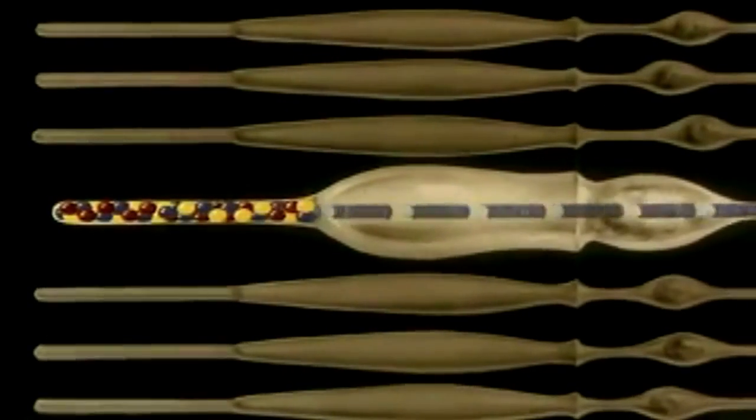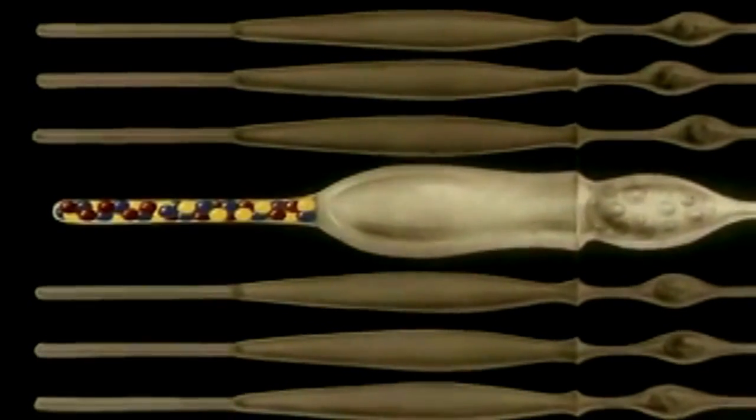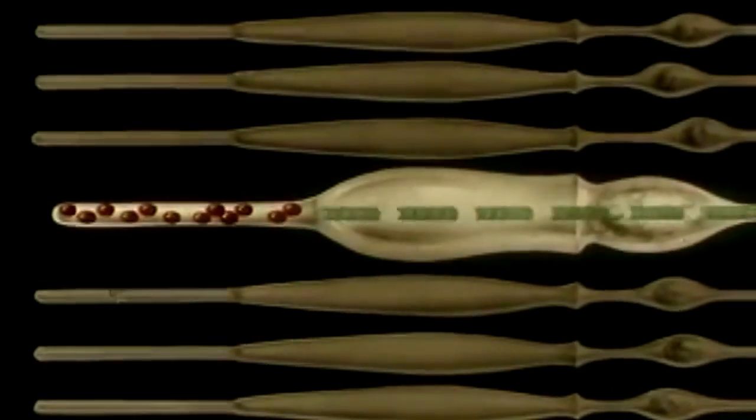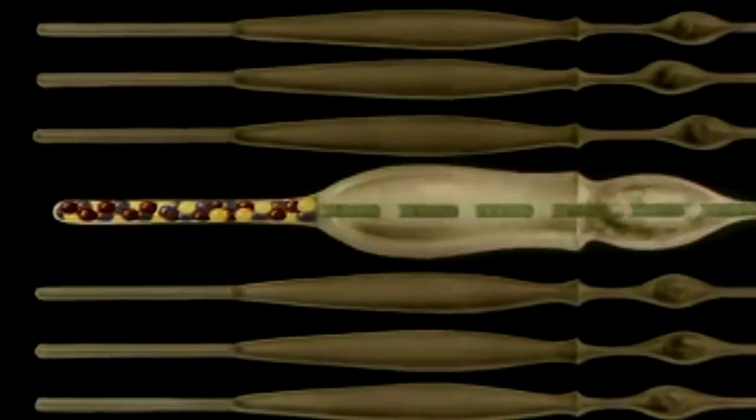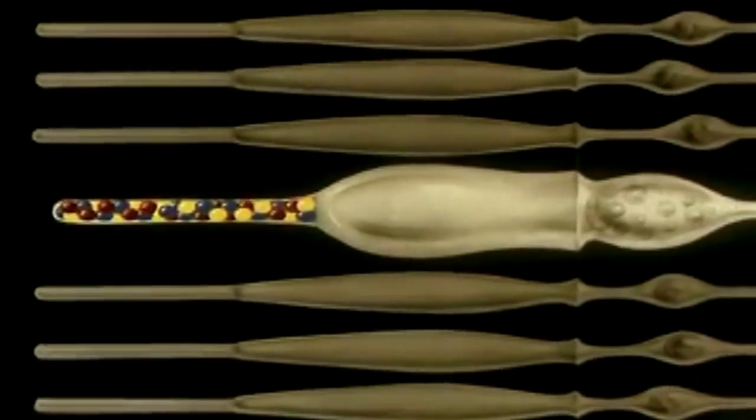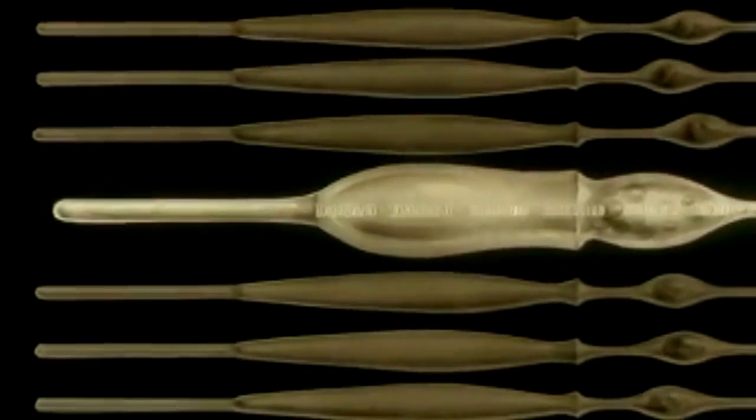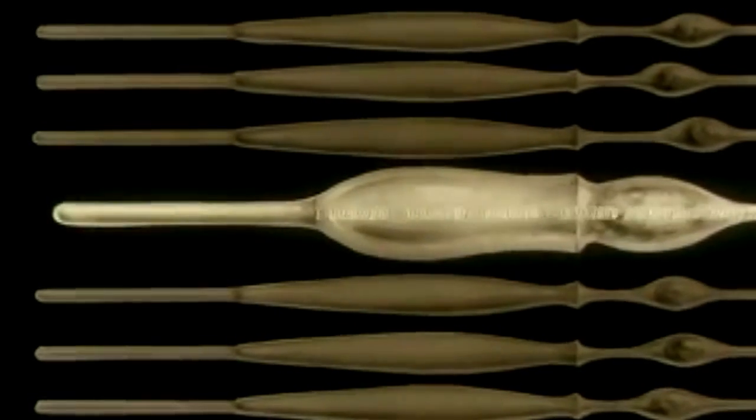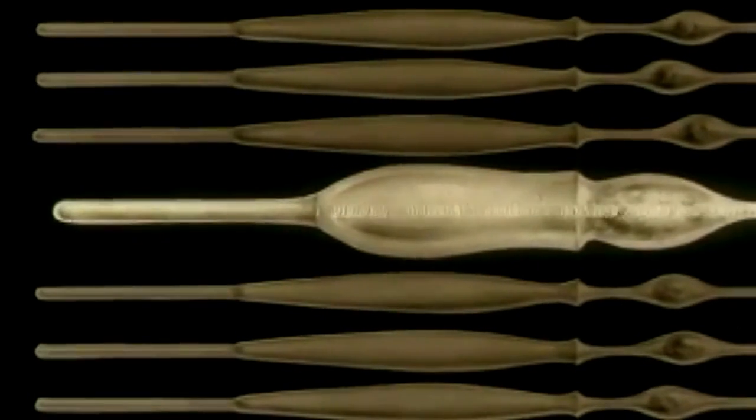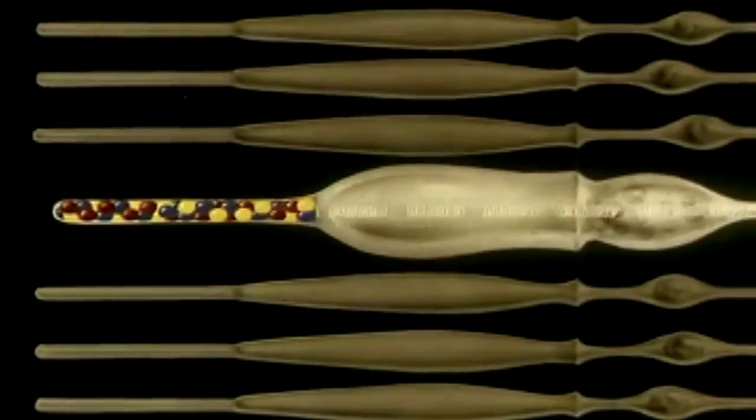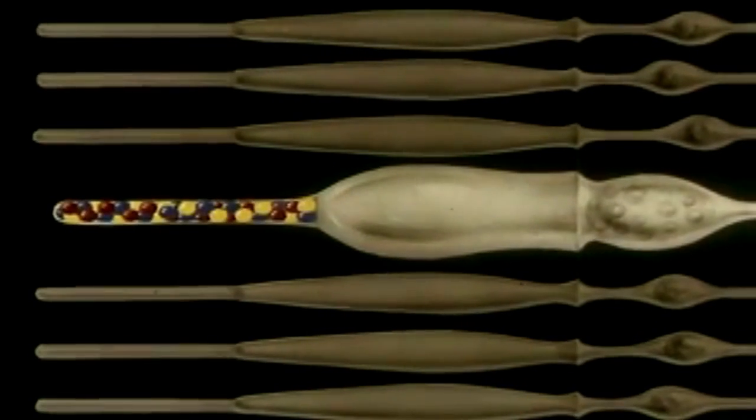However, the cones do even more, for they can create a corresponding nervous current for any and all colors by a combination of their sensitive chemical substances. When all three substances are broken down at the same time, we get a combination of all three colors, which we see as white light. White light affects all three of the substances because white light contains all the colors.